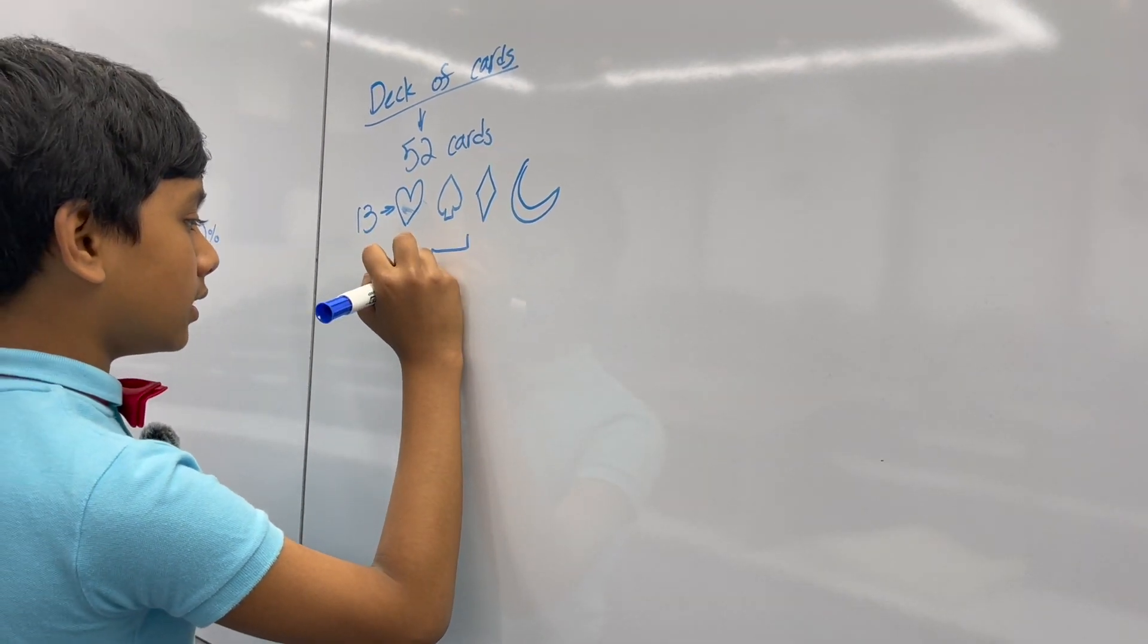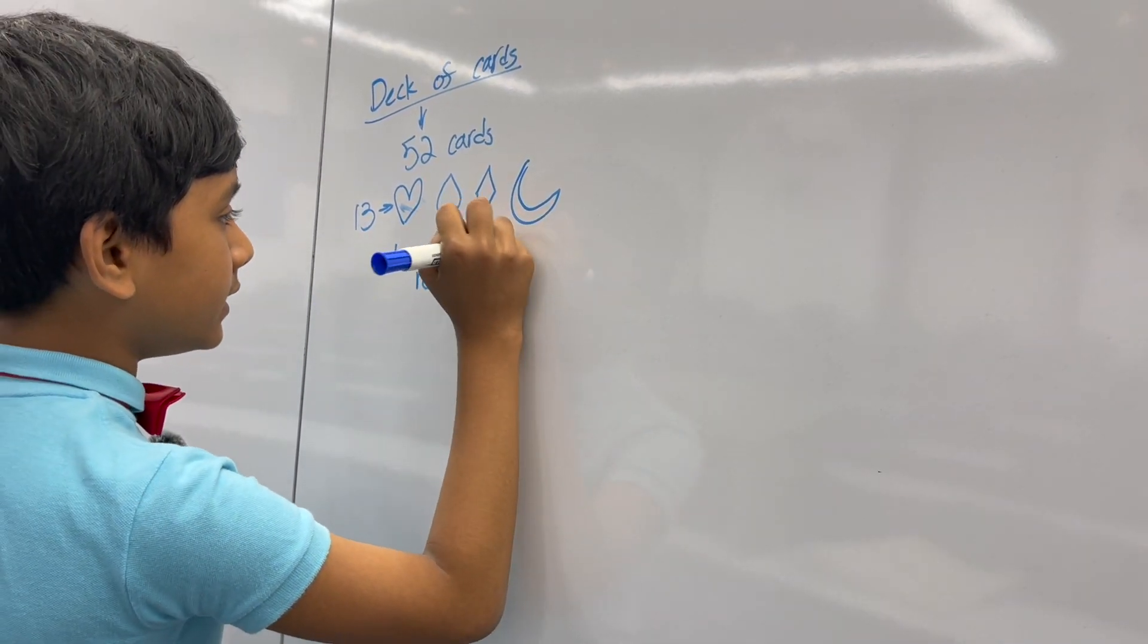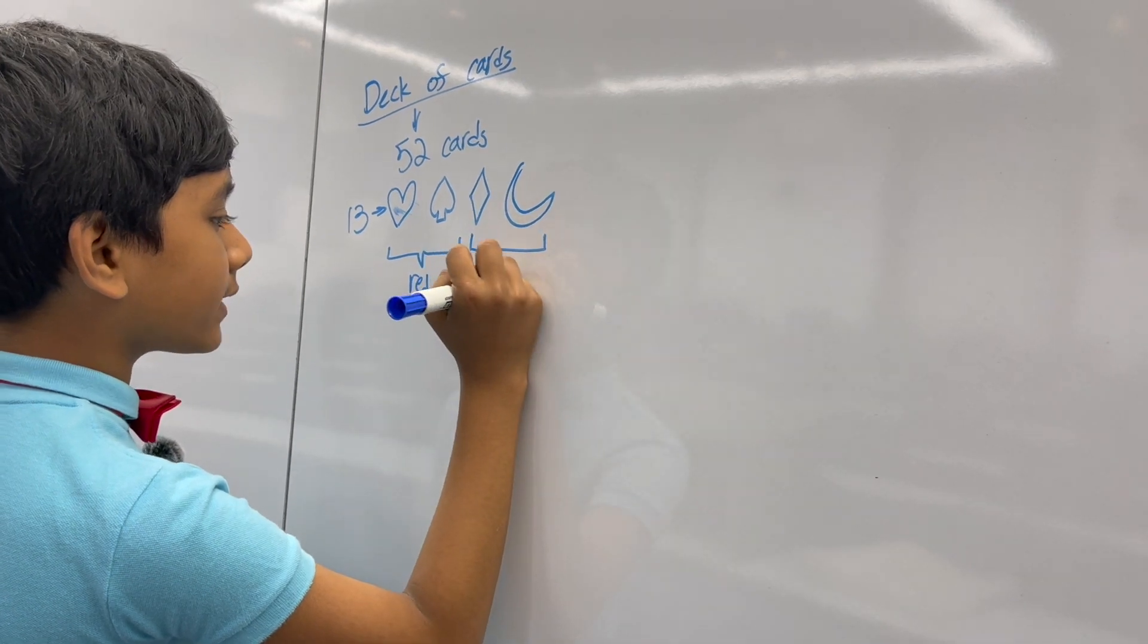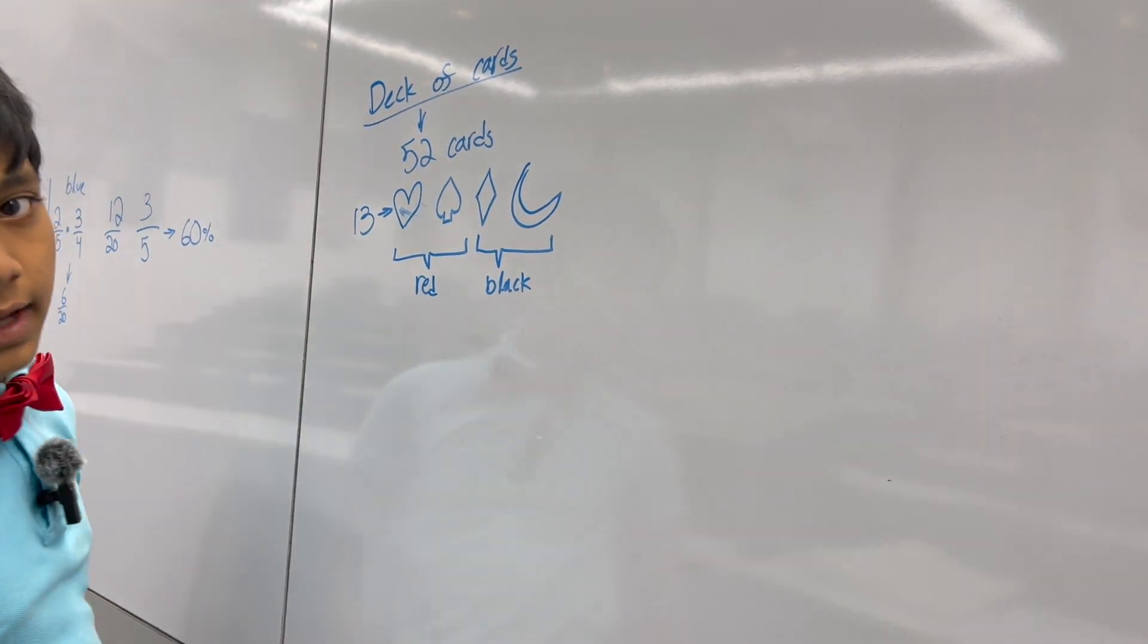So, let's, uh, these two are red, and these two are black. Yes, I know the spade is actually black, but whatever.